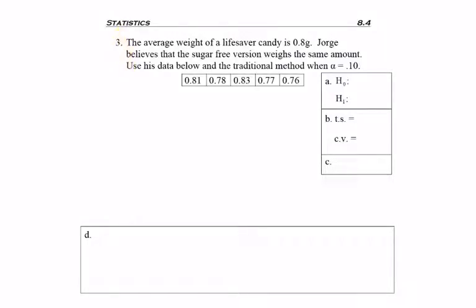Example 3. The average weight of a Lifesaver candy is 0.8 grams. George believes that the sugar-free version weighs the same amount. Use his data below and the traditional method when alpha equals 0.10.